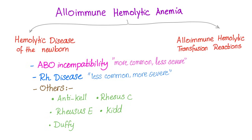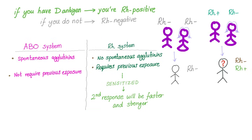ABO incompatibility is more common; RH incompatibility is more severe. In the RH system, if you have the D antigen, you are RH positive. The key difference between the ABO system and the RH system: ABO can have spontaneous agglutinins, which do not require previous exposure. The RH system does not have spontaneous agglutinins — it requires previous exposure, called sensitization.